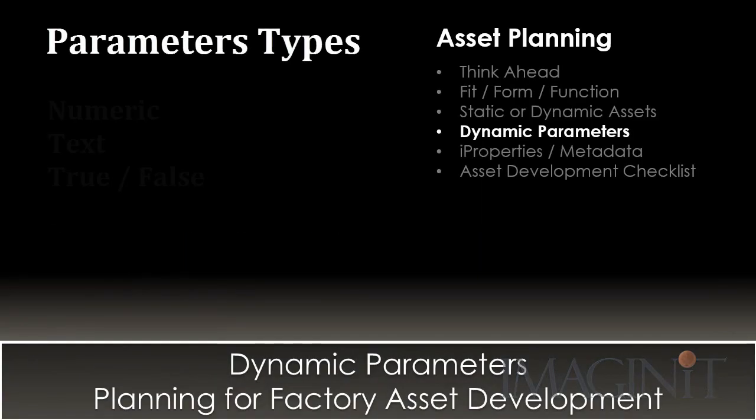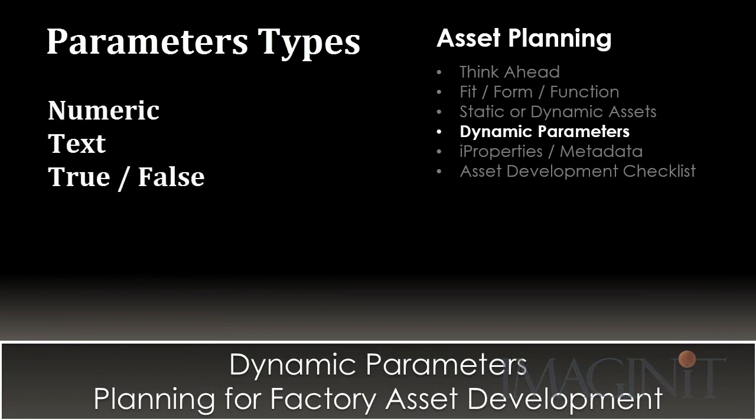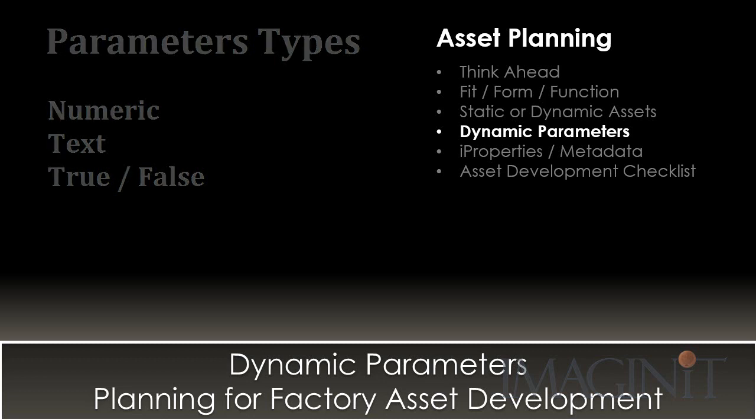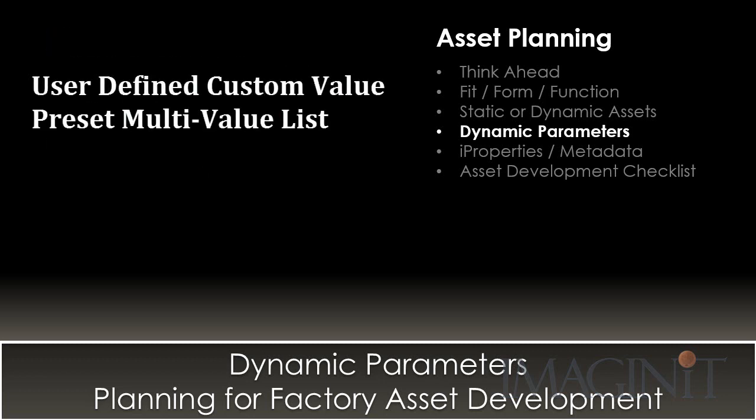When it comes to parameters, there are a few types: numeric parameters, text parameters, and true-false parameters. In this presentation, we're going to focus on using numeric parameters to control the size of your asset. There are two main types of numeric parameters: user-defined parameters, where the user can enter any custom value they choose, or a preset multi-value list. This allows you to establish a list of preset sizes for the asset.